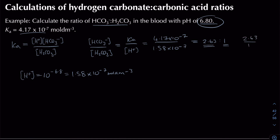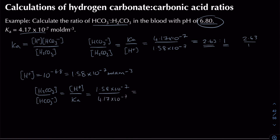We can also express that as a fraction. If instead we want the ratio of carbonic acid to hydrogen carbonate, we rearrange to get [H+] / Ka. That gives 1.58 × 10⁻⁷ divided by 4.17 × 10⁻⁷ = 0.379. So for every one part hydrogen carbonate there are 0.379 parts carbonic acid, expressed as 0.379 : 1.